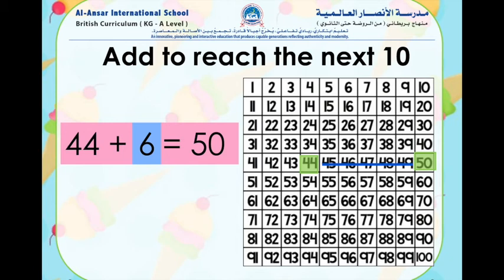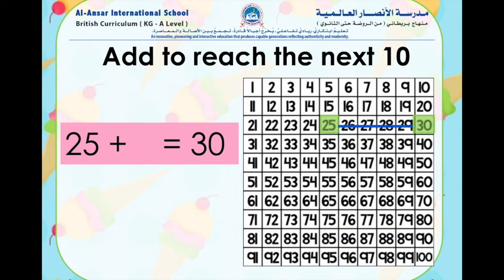If you are getting all these answers correct, amazing — keep on going! Let's try this one: here we have 25. We find 25 on the number chart. How many more do we need to count to reach the number 30? If you guessed 5, amazing! 25 plus 5 equals 30.